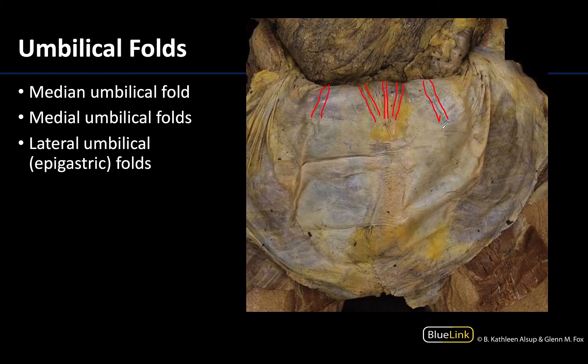In actual dissection I find it's typically these folds that I try to identify first, because you can often see the vessels pretty easily through the peritoneum and transversalis fascia. However, I must admit it is a little difficult to differentiate in this image.